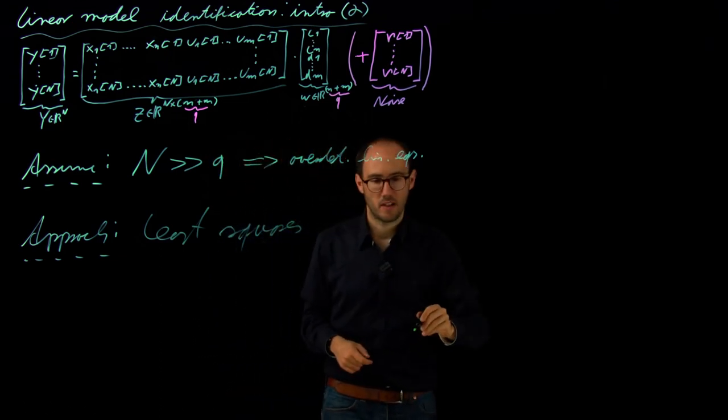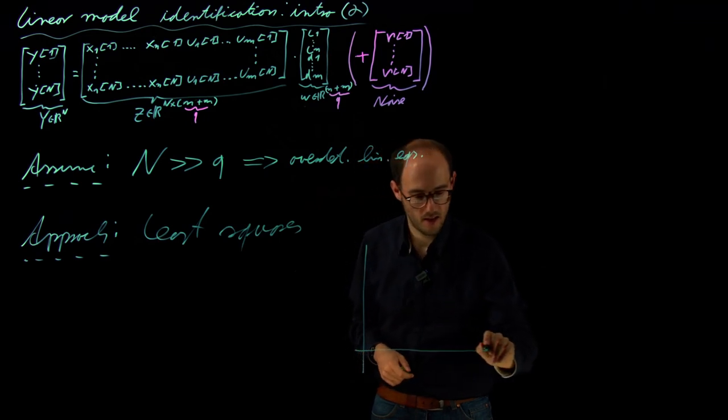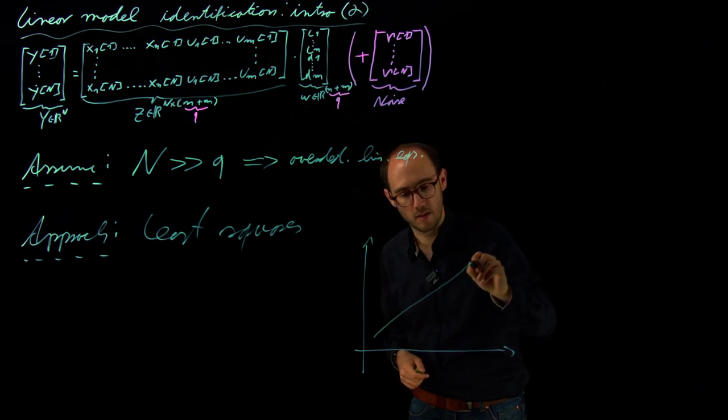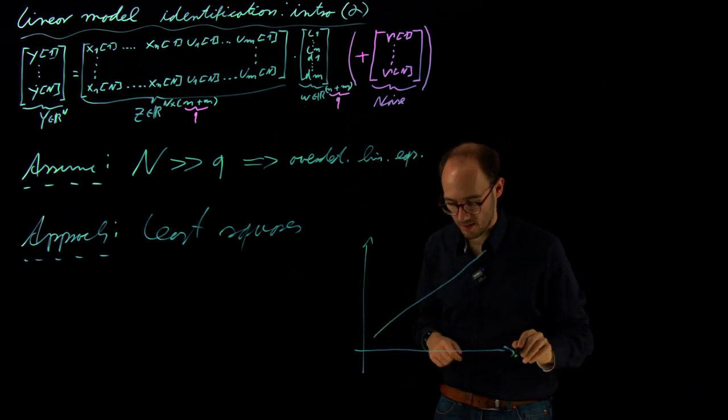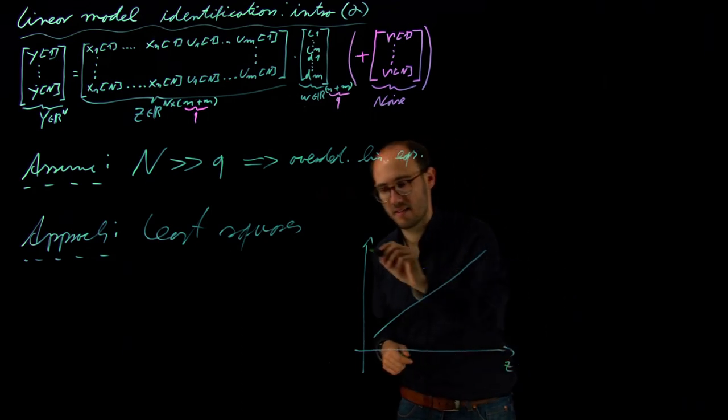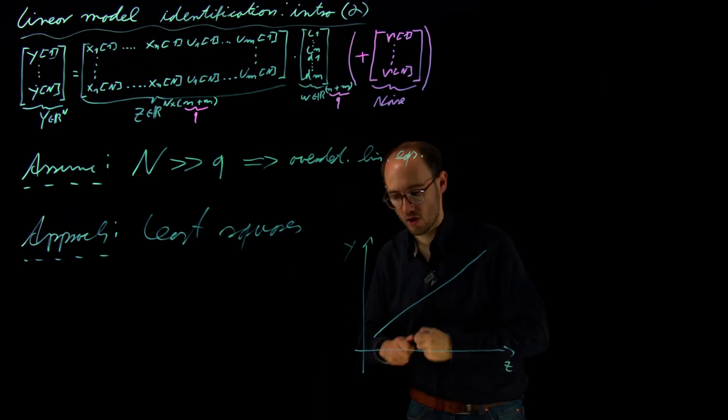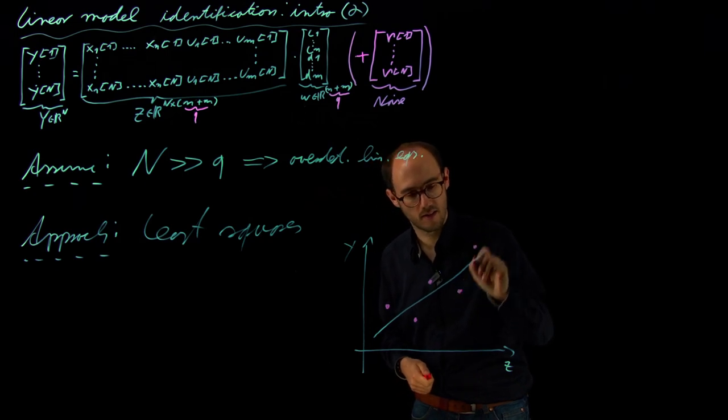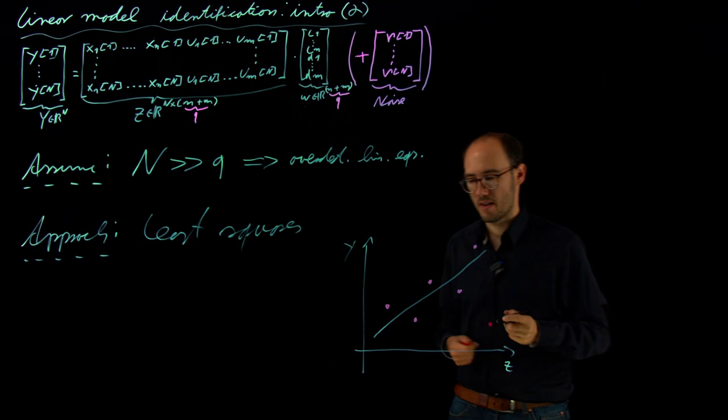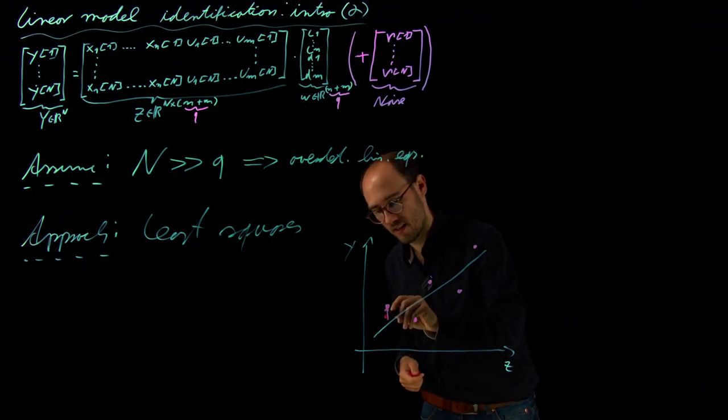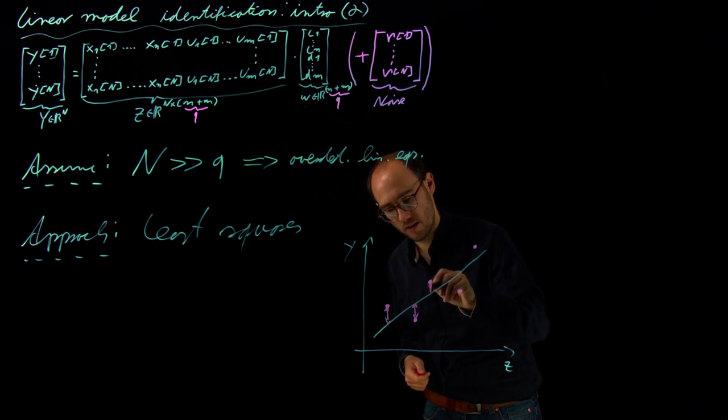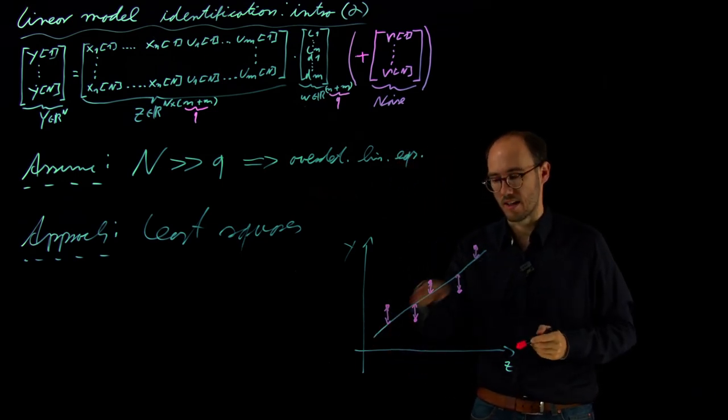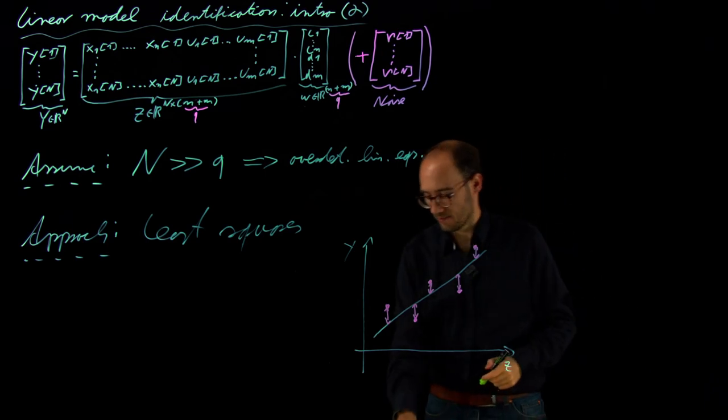What does that mean? Basically, if we have our model—some linear relation between inputs and outputs, let's call that small z and y—and we have measurement points along this system model, then the least squares approach tells us that we want to minimize the sum of the squared residuals between measurements and this linear model. Formally, that means